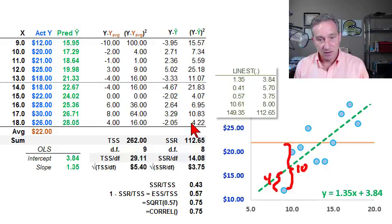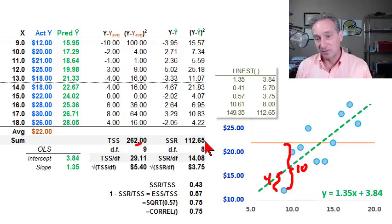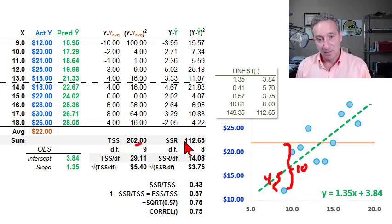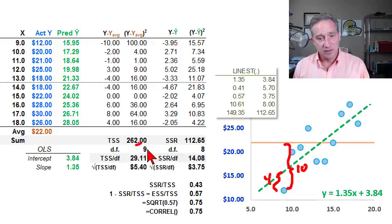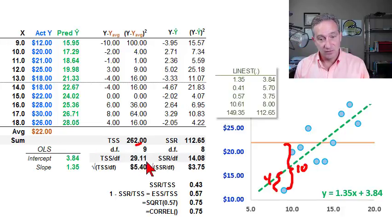That difference is squared, and the summation of all of those differences is the sum of squared residuals. This is also a measure of variation, but whereas the TSS is a measure of total variation, this is called a measure of unexplained variation — because it's the variation from the regression line, it's not explained by the regression. If we take the total sum of squares and divide by its degrees of freedom, which is N minus one or 10 minus one equals nine, we get 29.11, the sample variance of the Y values.